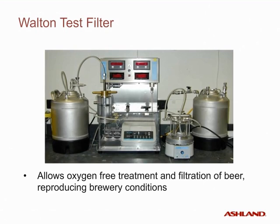In our beverage lab, we have a Walton test filter that allows us to filter and stabilize beer in an oxygen-free environment. We can treat the beer with a variety of stabilizers such as PVPP or silica and pass it through a small DE leaf filter, depositing it in a receiving keg in an oxygen-free environment. This allows us to assess beer as a brewery would. One important consideration is that once a beer sample is exposed to the environment, oxygen pickup becomes a big factor — oxygen has a detrimental effect on the stability of beer.